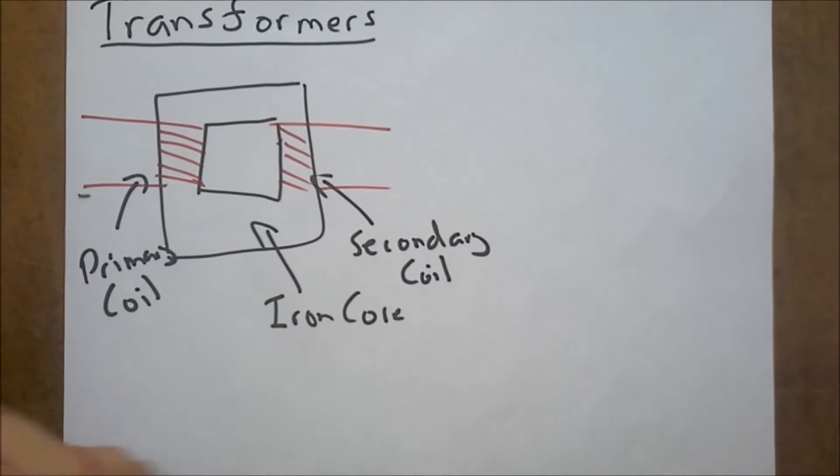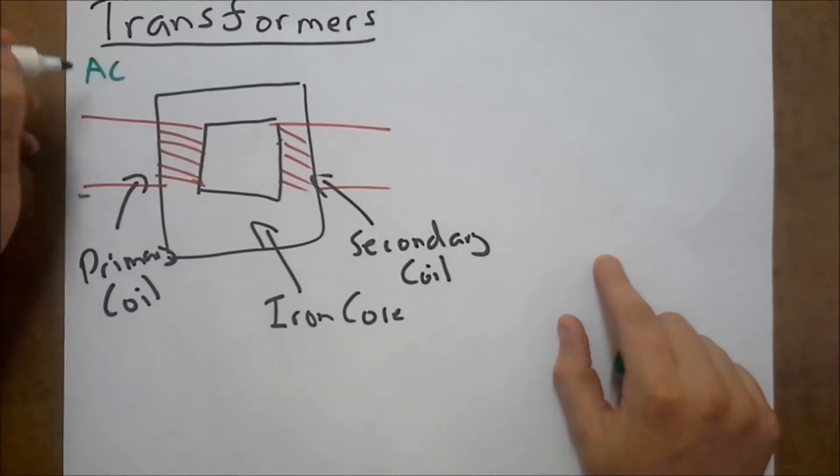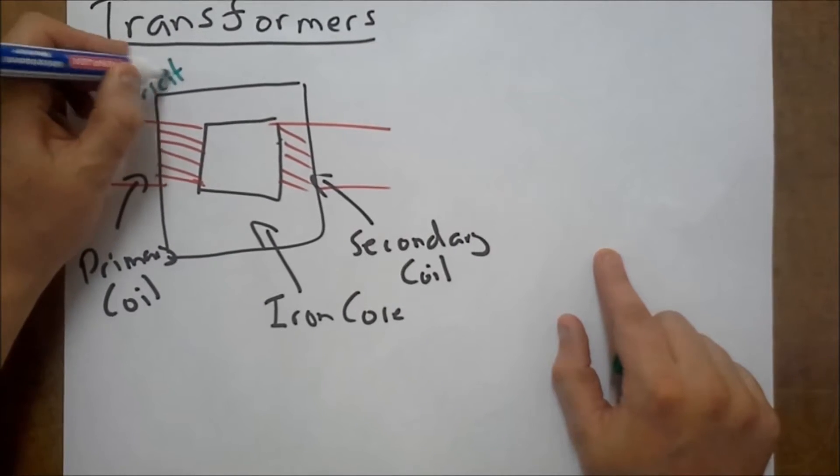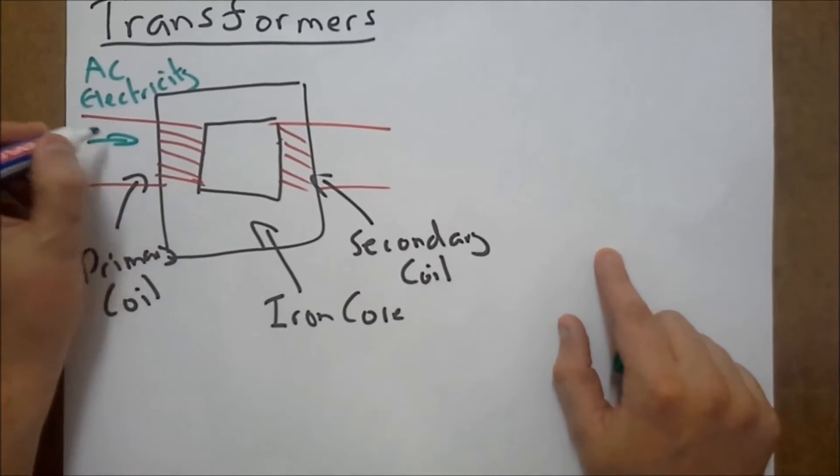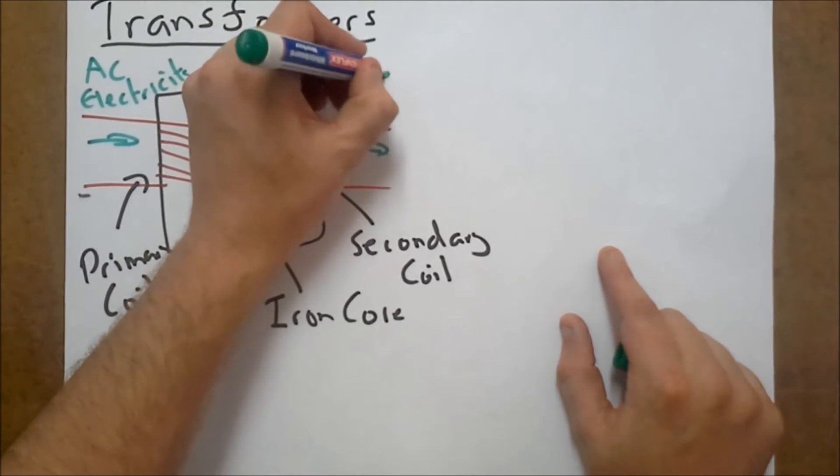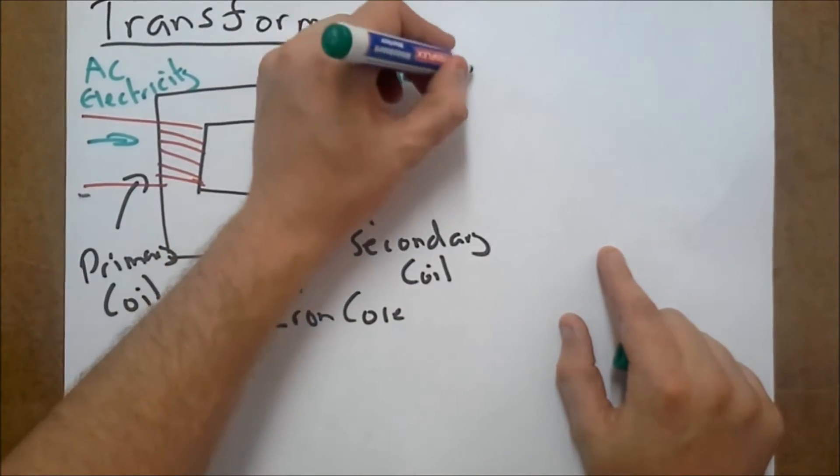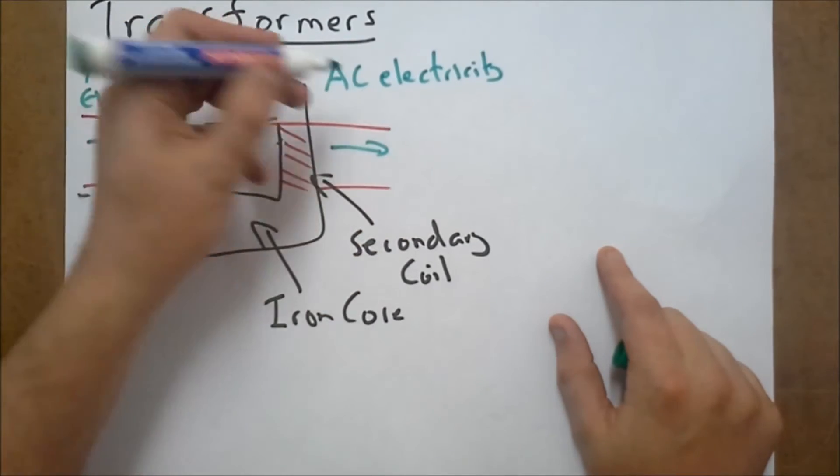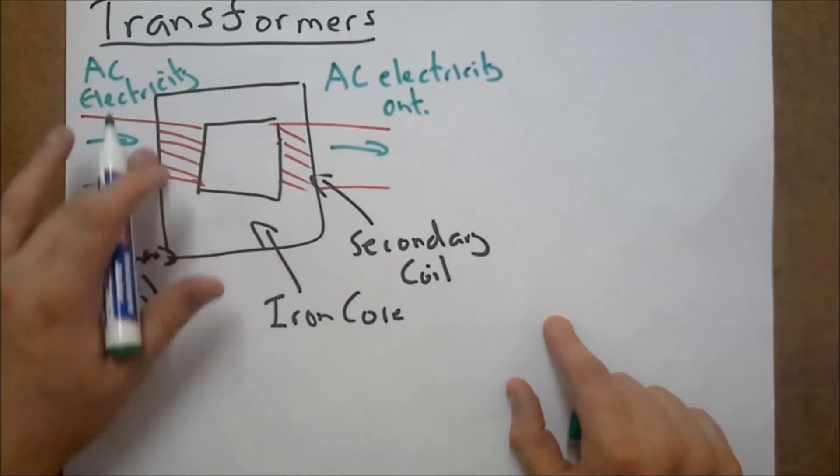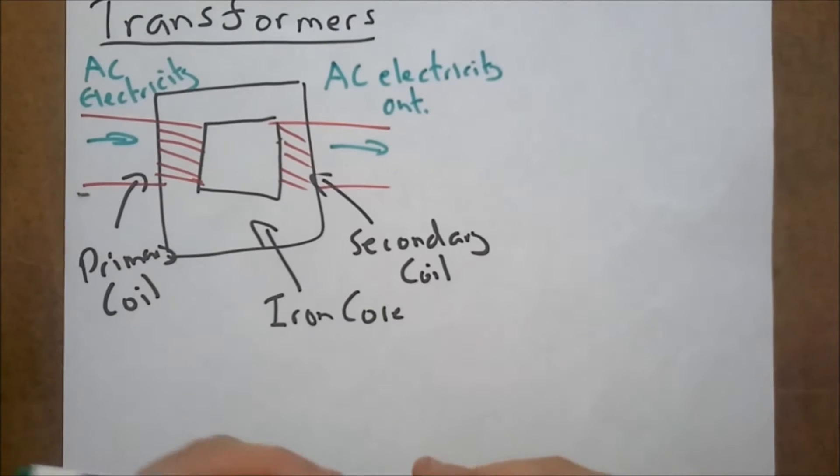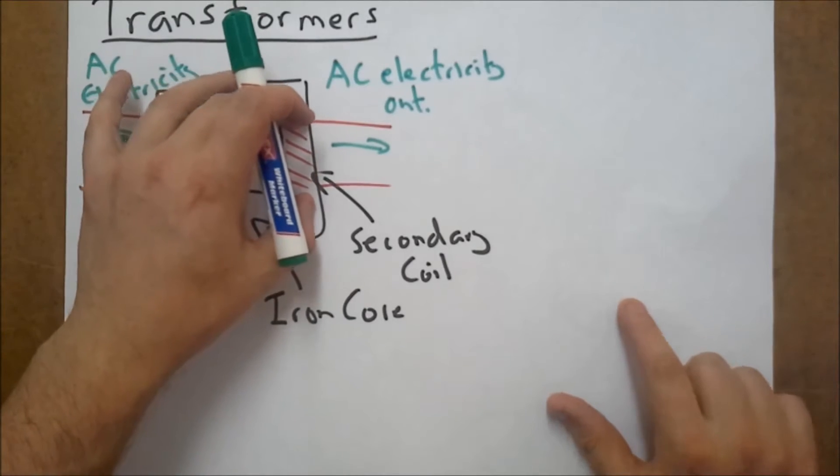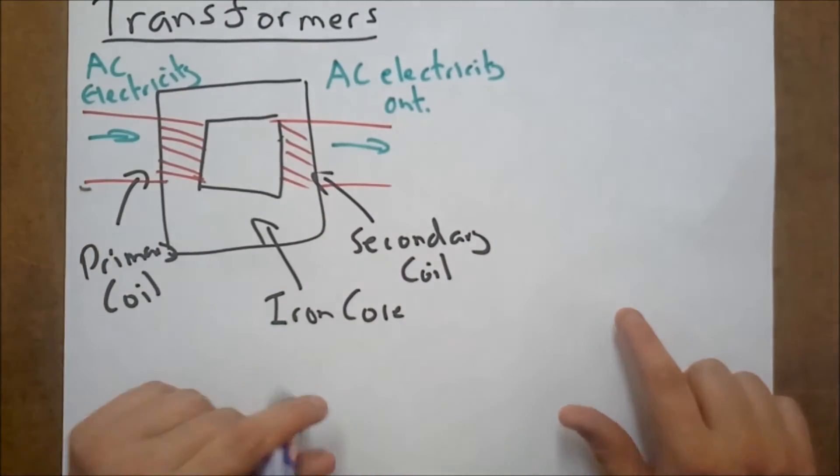Now, coming in, we've got AC electricity coming in. We end up with AC electricity coming out. So AC electricity going in. Now, here in the coil, that AC electricity gets turned into a magnetic field. The magnetic field goes through the iron core and induces electrical current inside the secondary coil.